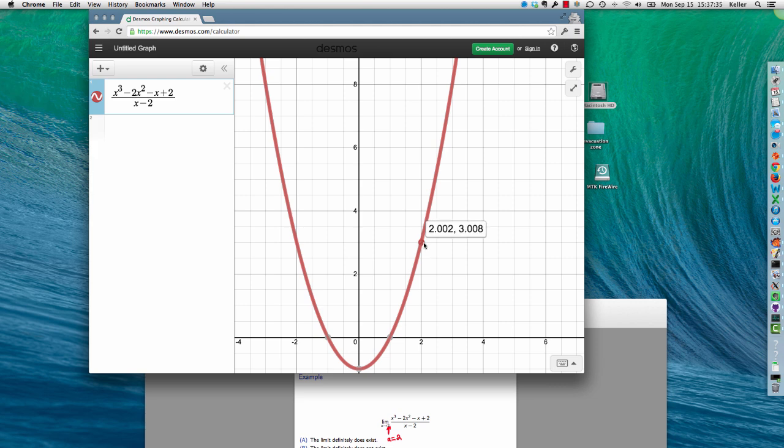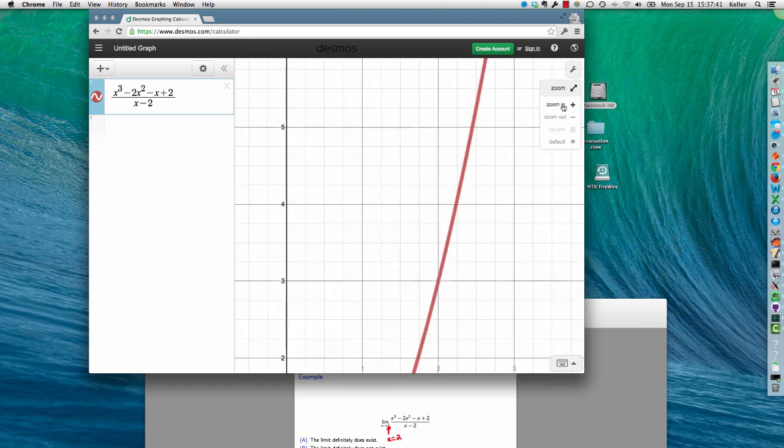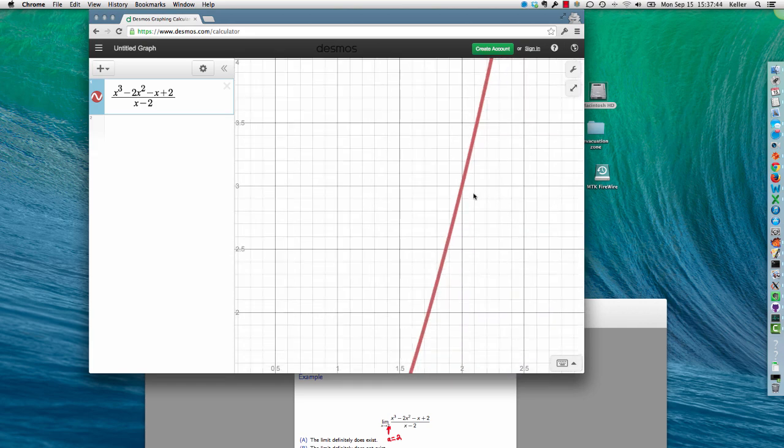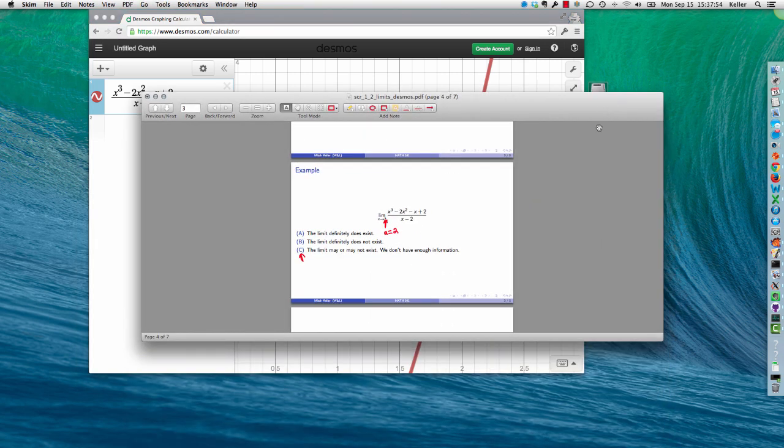And yep, looks like we're getting very close to 3. And then we hit our undefined again. And you can keep zooming in on that if you want to, and it looks very much like that graph goes right through there. And so that would be enough for our purposes right now, to say that that limit is equal to 3.